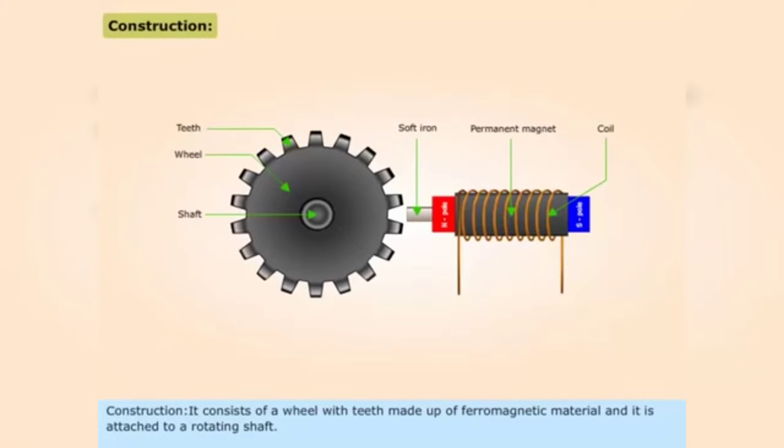Construction: It consists of a wheel with teeth made up of ferromagnetic material and it is attached to a rotating shaft. A coil is wound on a permanent magnet. It is extended by a soft iron pole piece.